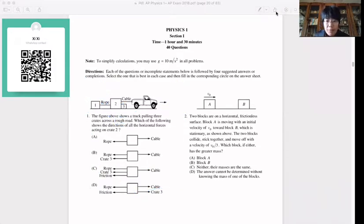Now let's move on to question 2. Two blocks are on a horizontal frictionless surface. Block A moves with initial velocity V0 towards B, which is stationary as shown above. Both blocks collide and stick together. Stick together means that MA and MB will move together and move with velocity V0 over 3.